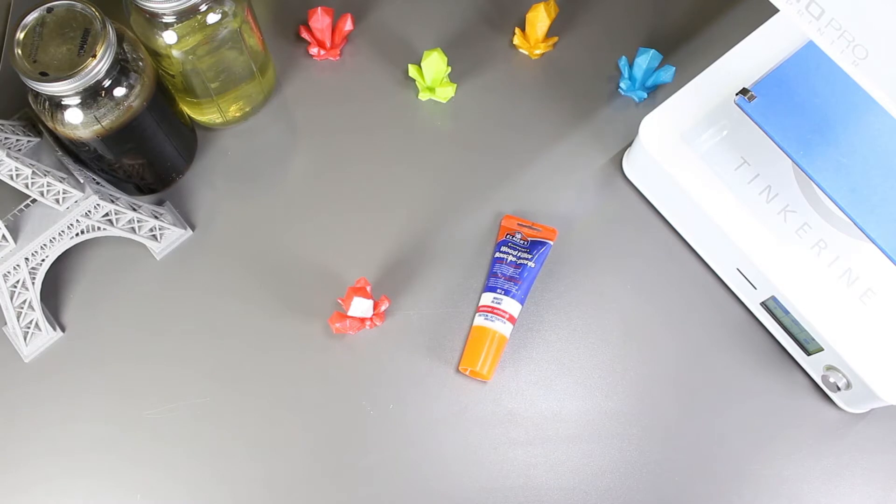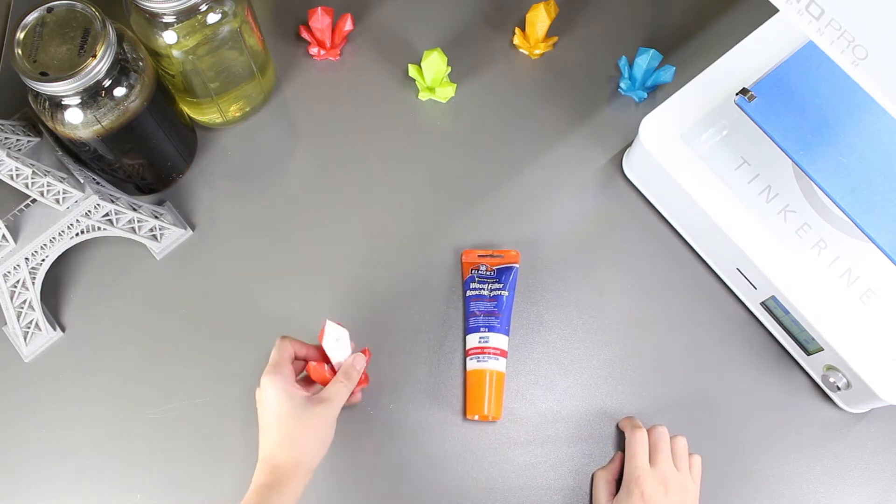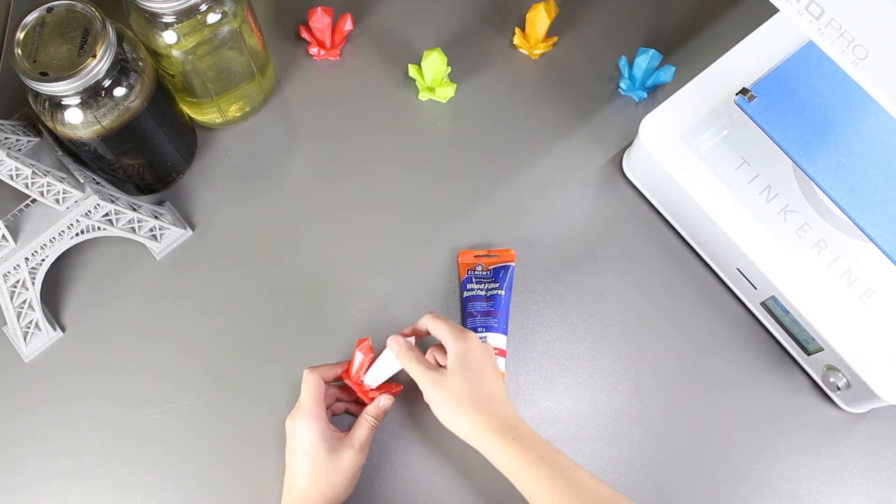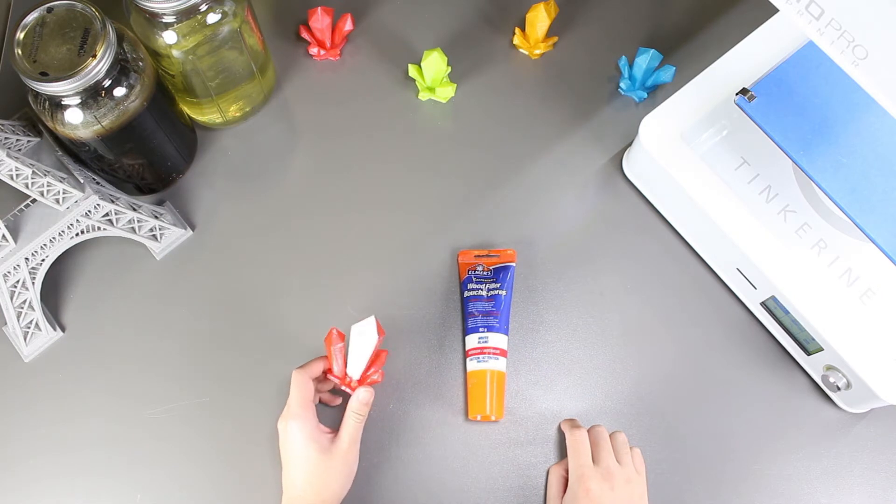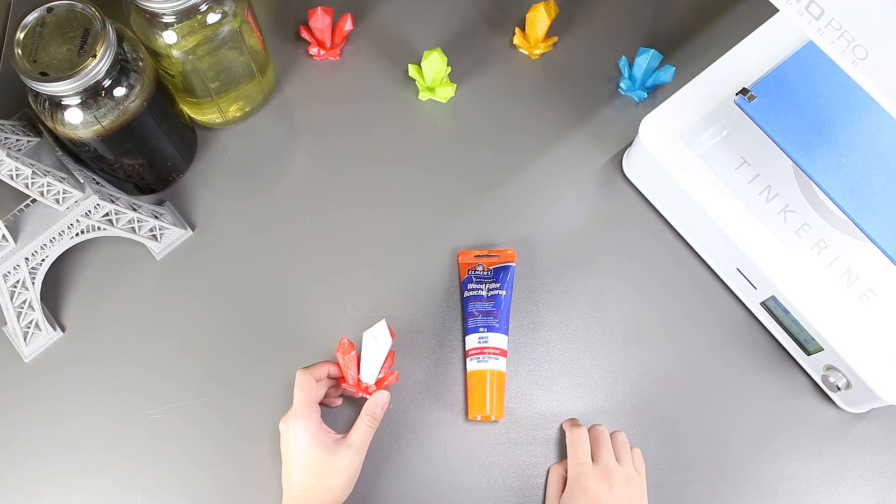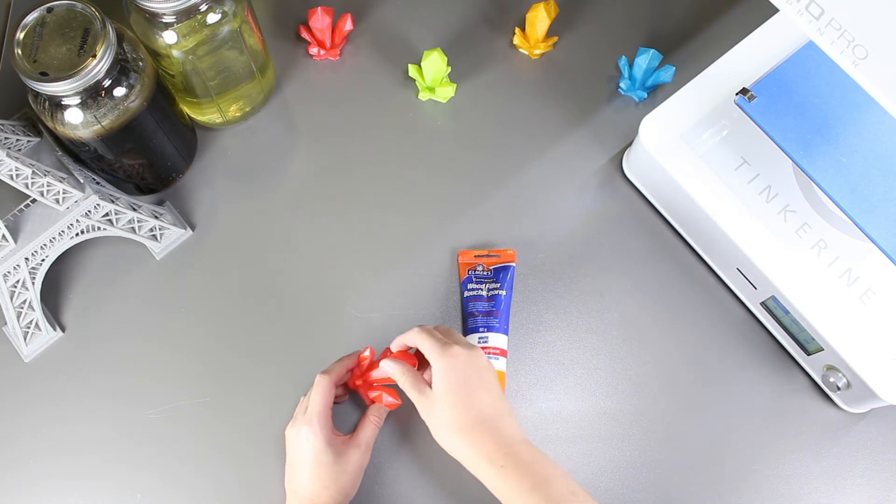Well there we have it. We tried using wood filler to post process our 3D model and it looks like it works pretty well. It's less of a hassle to set up, unlike using primer where you have to spray in a well ventilated area. You can do this anywhere. It fills in the separate layers and takes minimum time and effort to smooth out and even the surface.